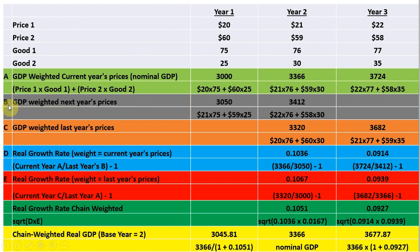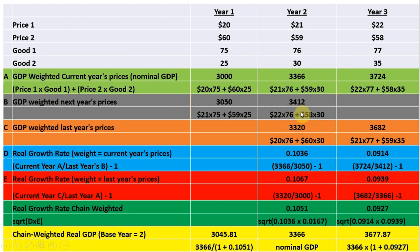In row B, we have GDP weighted in next year's prices, and the value here is 3,050. I took the output in year one and valued it at next year's (year two's) prices: 21 times 75 plus 59 times 25. Similarly for year two, I take the output in year two and value it at year three's prices: 22 times 76 plus 58 times 30. There's no value for year three since we don't have year four's prices.